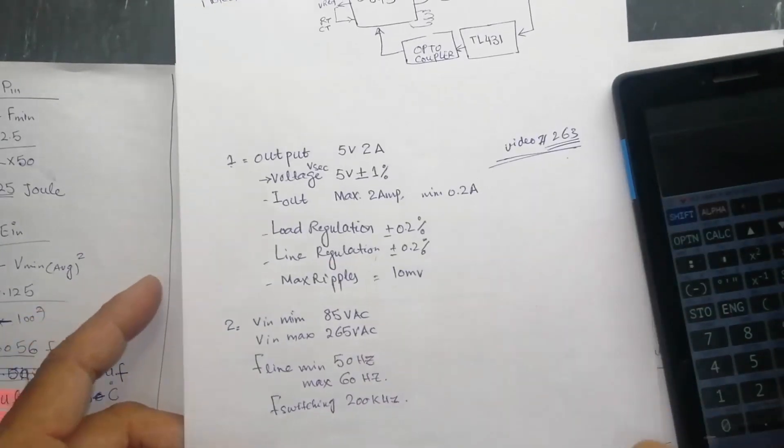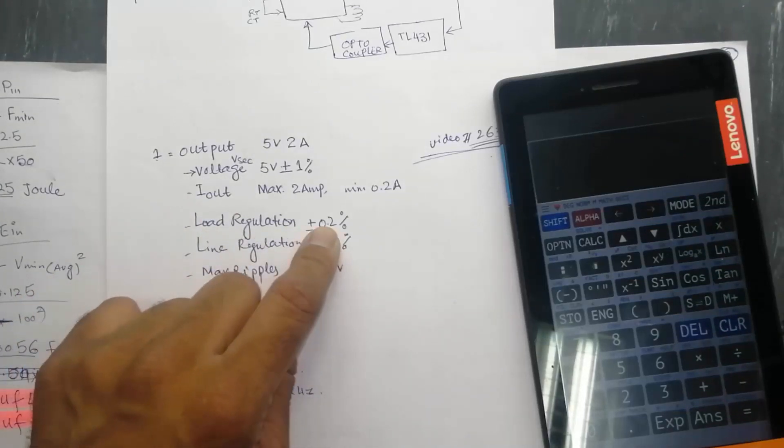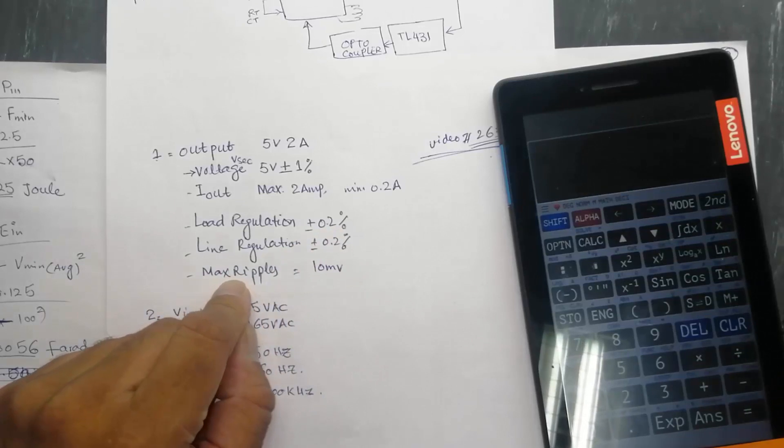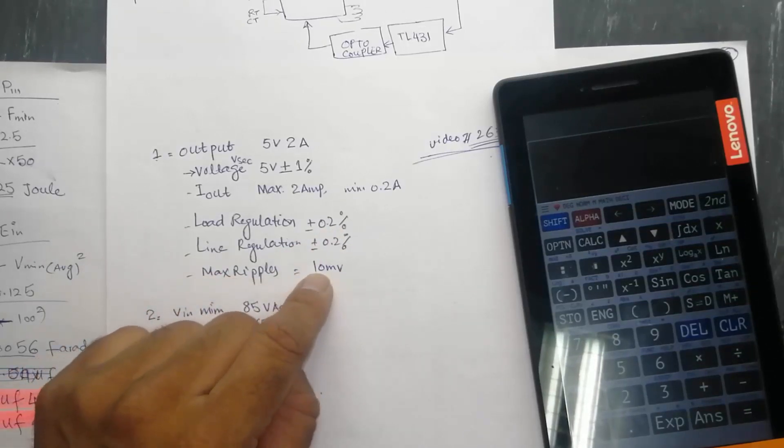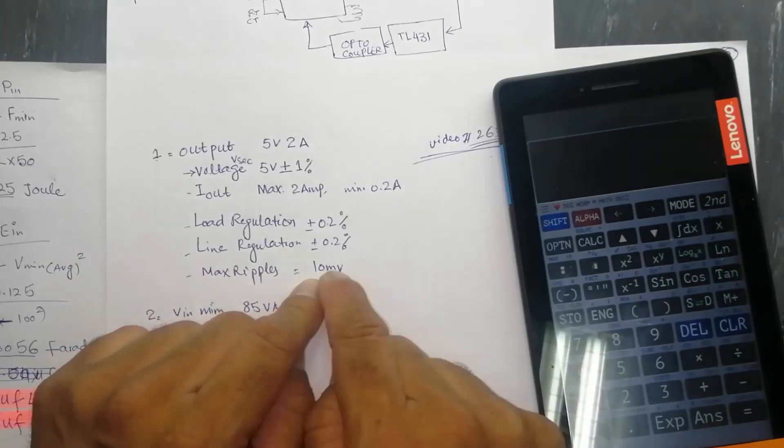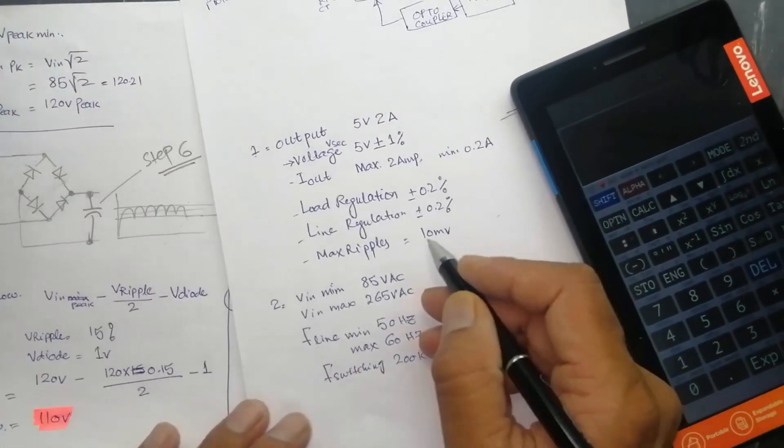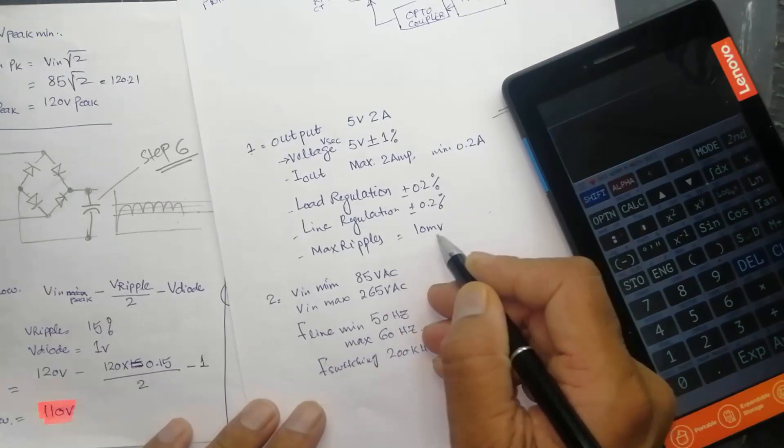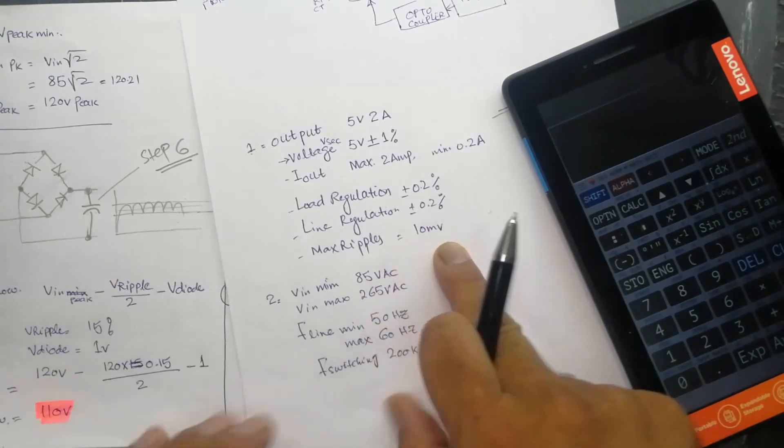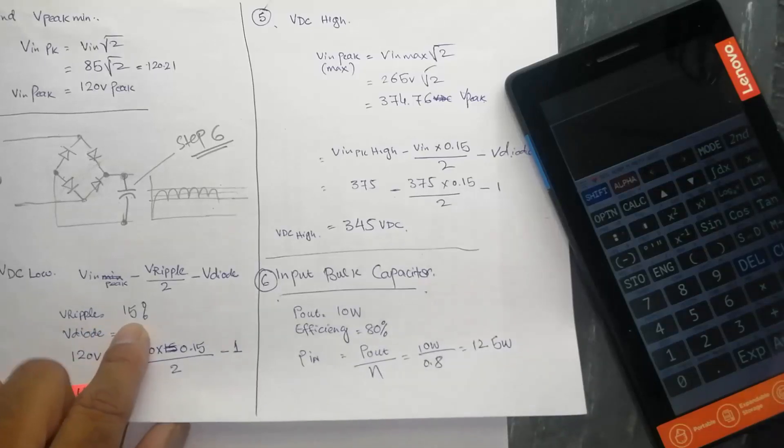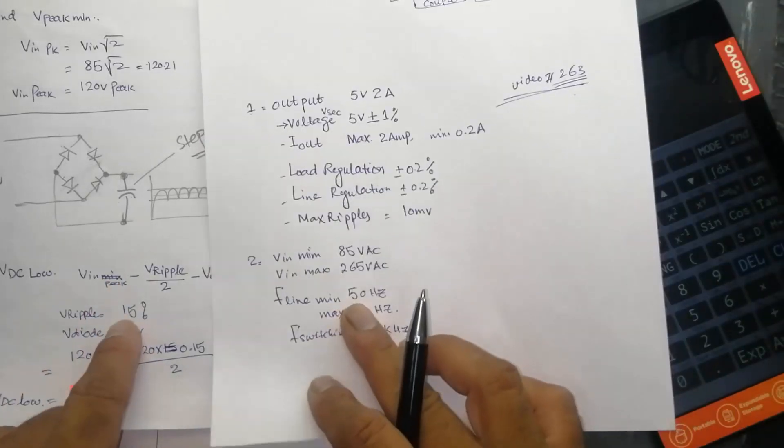I have some questions from my friends. There was a doubt in load regulation 0.2% and ripples. Maximum ripples 10mV. What are these ripples? These ripples are in output voltage. What was the confusion to my friends - I discussed 10mV ripples but when we calculate here V ripples it is 15 percent. So these are two different things.